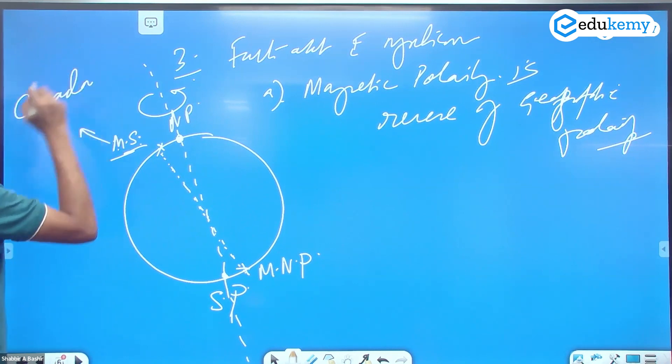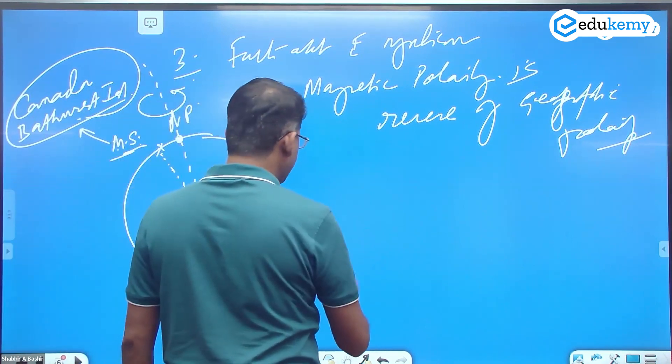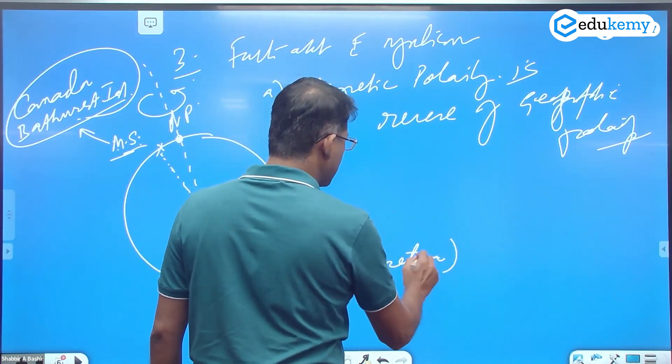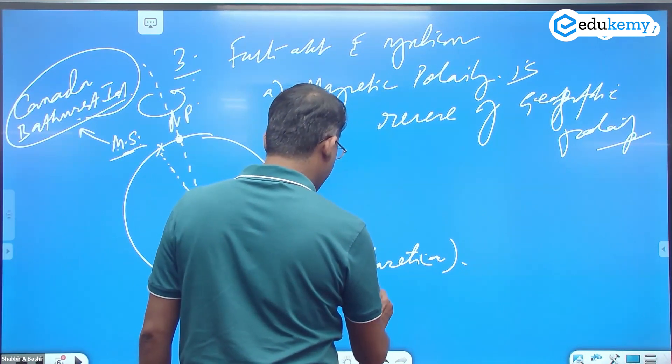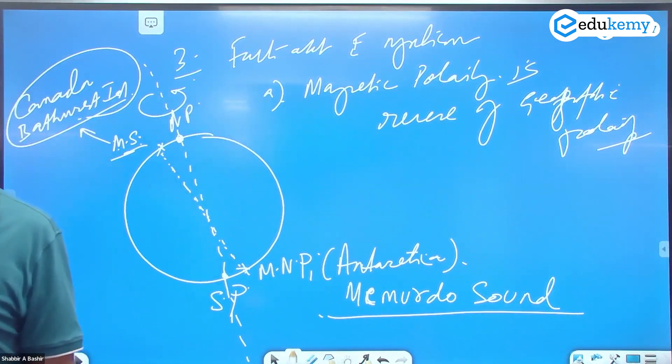The magnetic south pole, which is near the geographic north, is in Canada near a place called Bathurst Island (B-A-T-H-U-R-S-T). The magnetic north pole is in Antarctica near the south pole, at a place called Mac Merdo Sound.